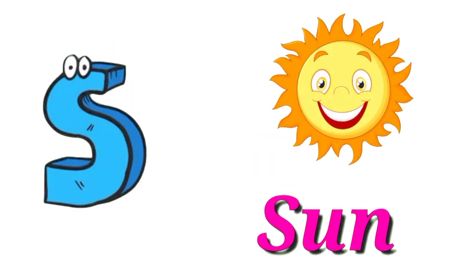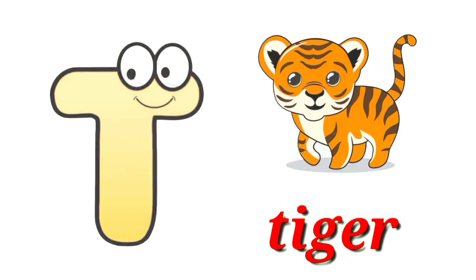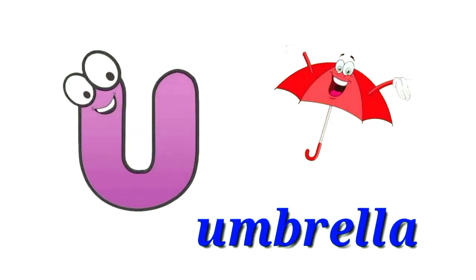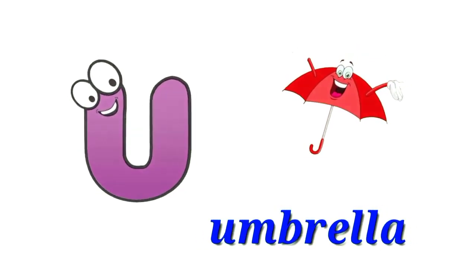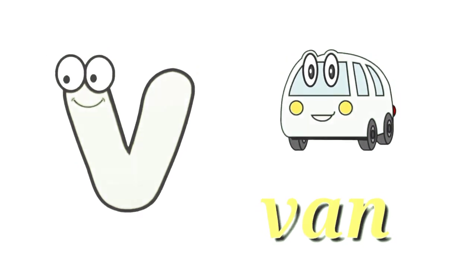S for Sun, T for Tiger, U for Umbrella, V for Van.